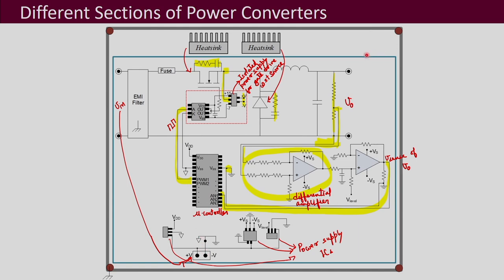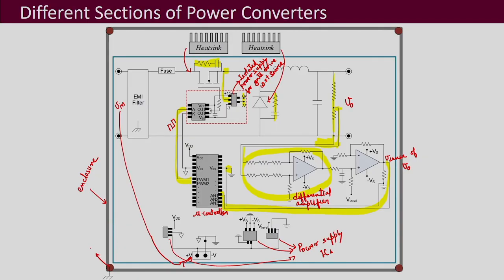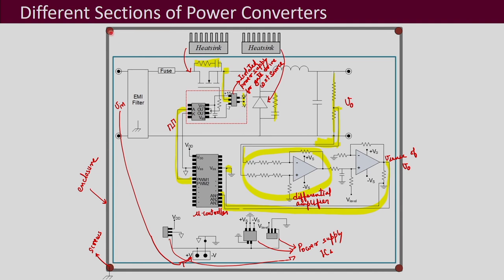All these heat sinks, EMI filters, and other things then have to be put inside an enclosure. The enclosure is represented here by the grey-coloured box — it is the box inside which you put everything, and that is finally what your converter is. You can have screws fixed to the enclosure via which your PCBs, inductors, and other components in your converter may be fixed to the enclosure.